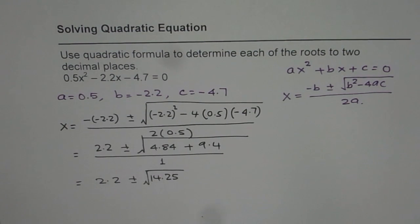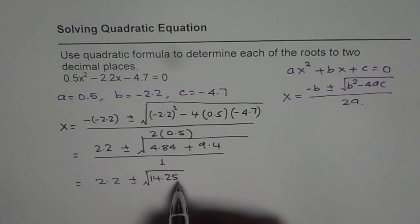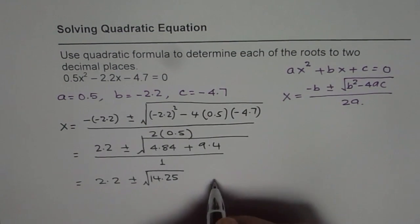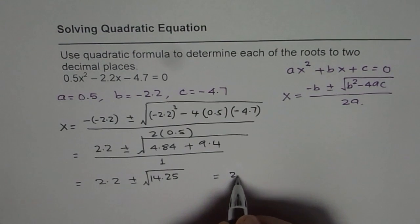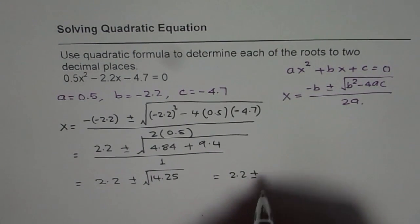The square root is 3.7735. So let me write this as 2.2 ± 3.77.